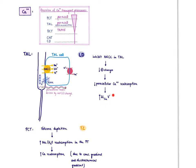When you block NKCC with loop diuretics, there are no positive charges, so calcium and magnesium are not repelled into the paracellular space and less is reabsorbed. Therefore loop diuretics cause hypocalcemia as an adverse effect. For thiazide diuretics, we have to think differently. With any diuretic, volume depletion occurs and a process called diuretic braking kicks in — the proximal convoluted tubule tries to reabsorb more sodium and water to restore sodium balance.